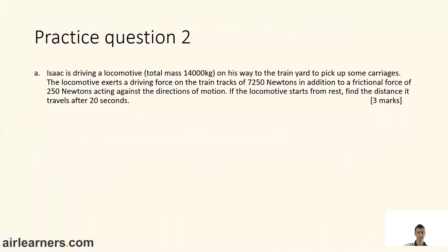Let's do another question. Okay, so Isaac is driving a locomotive of total mass 14,000 kilograms. On his way to the train yard to pick up some carriages, the locomotive exerts a driving force on the train tracks of 7,250 newtons, in addition to a frictional force of 250 newtons acting against the direction of motion. If the locomotive starts from rest, find the distance it travels after 20 seconds. Three marks, so about three minutes. You can pause the video and get back to it after you've done the question.